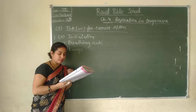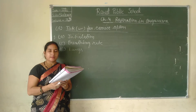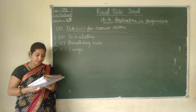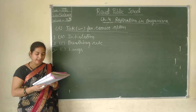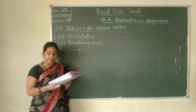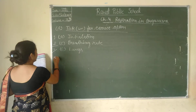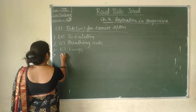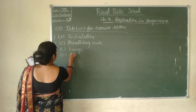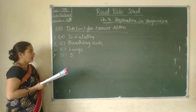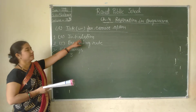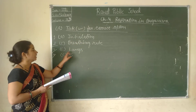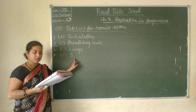The fourth question is: respiration takes place in how many stages? The options are one, two, three, or four. The right answer is C — three. To recap: first answer is inhalation, second is breathing rate, third is lungs, and fourth is three.